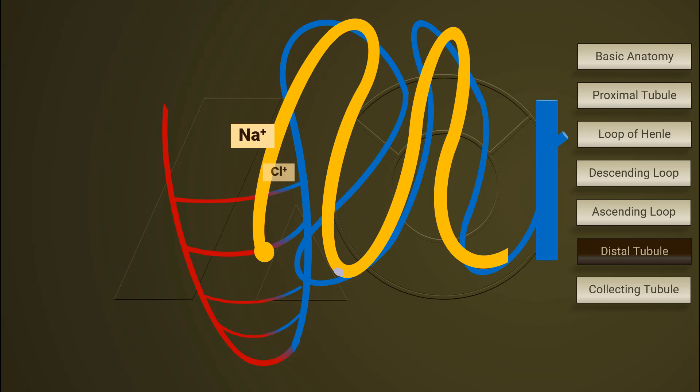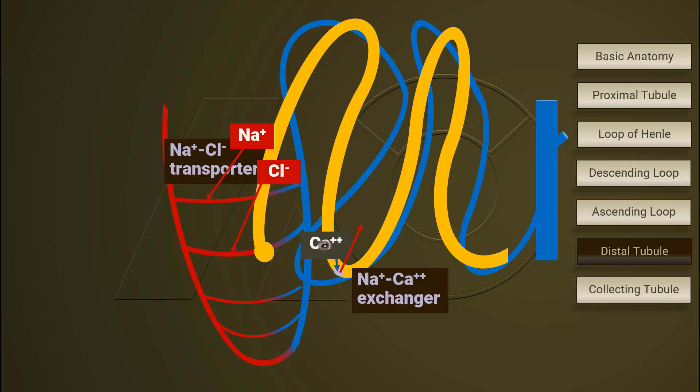10% of sodium chloride in the lumen is actively absorbed via sodium chloride transporter. Calcium passes through a channel then sodium calcium exchanger into interstitial fluid.